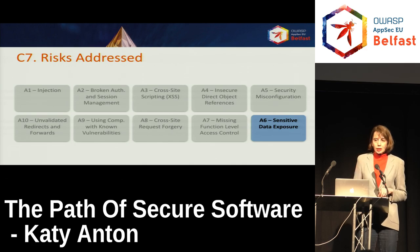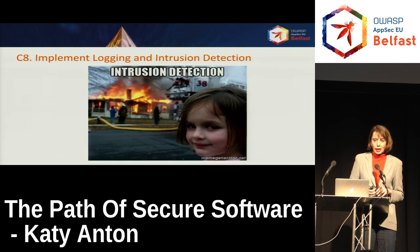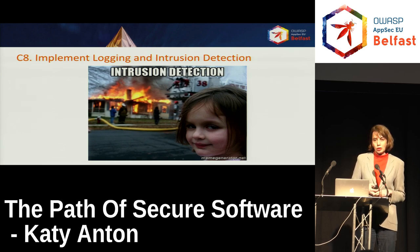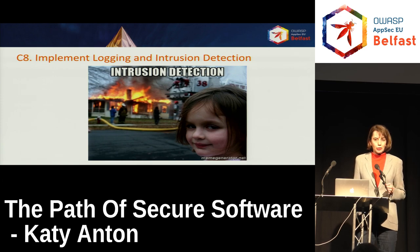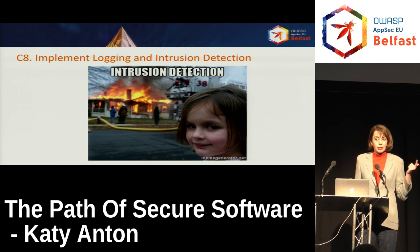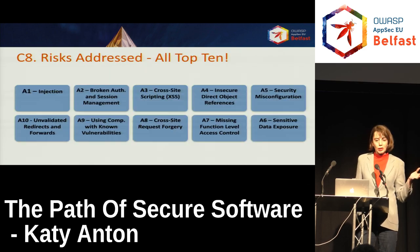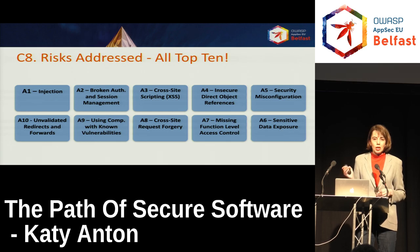Another thing we can do is have logging and intrusion detection in place. Logging should not be used for debugging or troubleshooting only — it can also be used for application monitoring, compliance monitoring, and intrusion detection. Having a well-designed logging mechanism coupled with a good detection mechanism can help to prevent all the OWASP top ten risks.